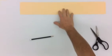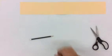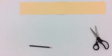You'll need your glider template, the wing template paper, you'll need scissors, and you'll need a pencil.